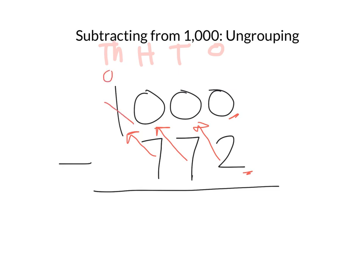We're going to cross off our thousand and trade it for 10 hundreds. Remember, when we count hundreds — if we had hundreds blocks or hundreds flats — we would count 10 of them to get to a thousand. So now we have 10 hundreds. But we still have nothing in the tens place, so we're going to cross off one of the hundreds and break it apart into 10 ten-sticks. But there's still only a zero in the ones place, so we're going to go next door to our tens place and ungroup a 10. We had 10 ten-sticks; we ungroup one into 10 ones. Now we have 10 take away 2.